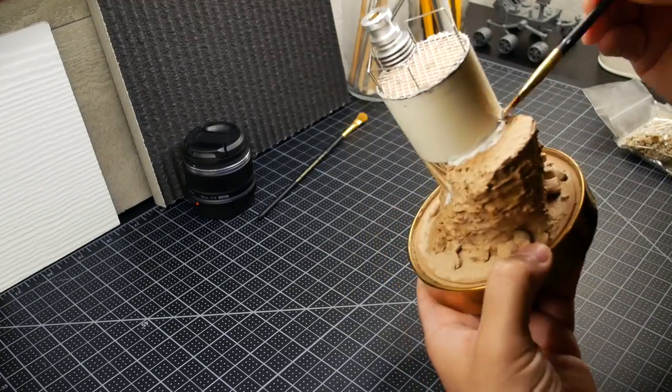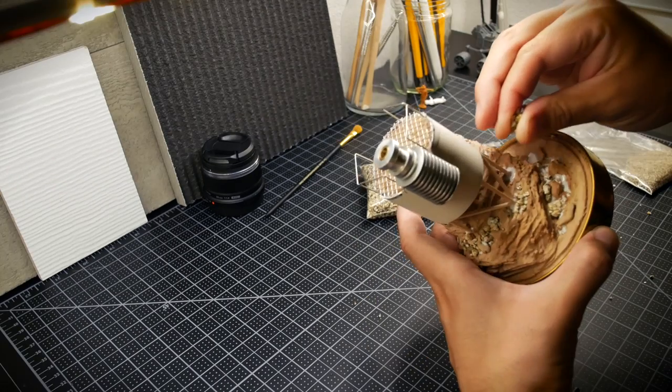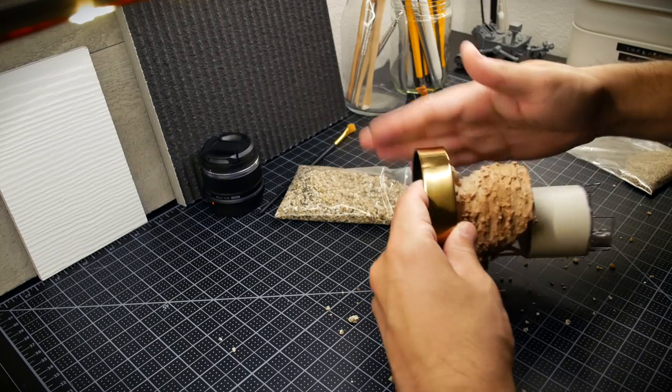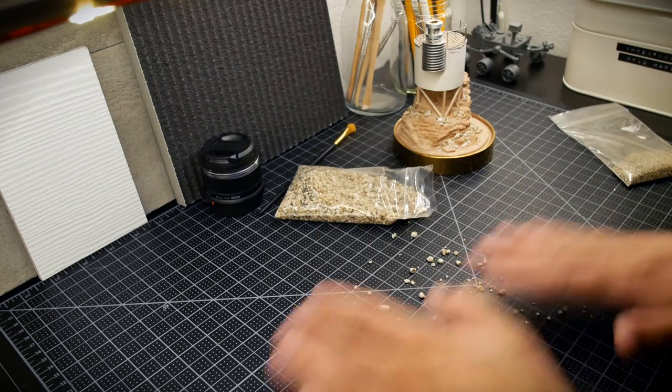Whenever I'm outside, I like to keep an eye out for materials that could be used for dioramas. In this case, I'm using various sizes of gravel and sand gathered from outside my house. I tap the excess off and save it for later use.